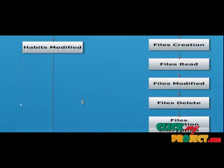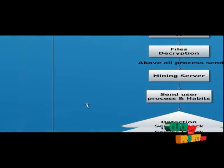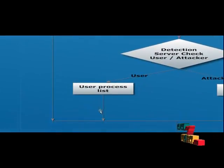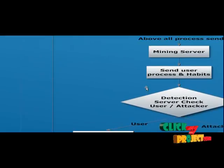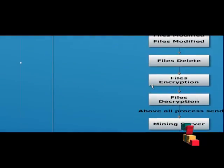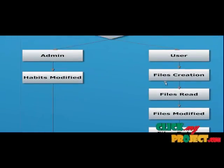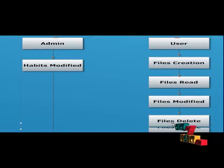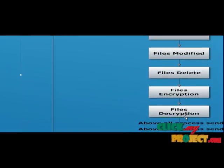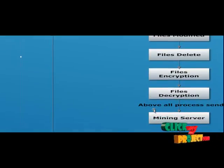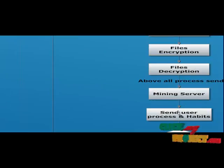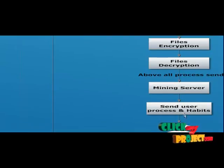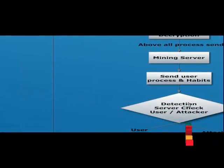The habit file is modified, and then this modification is applied and reconnected. For the user flow: the user enters, then proceeds to file creation, then goes to the file read frame, file modifications, file details, file encryption and decryption. After all processes, data is sent to the mining server, which sends to the user process, which is then sent to the deduction server.